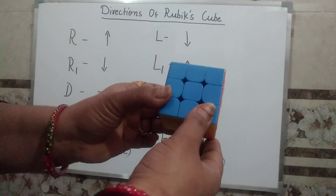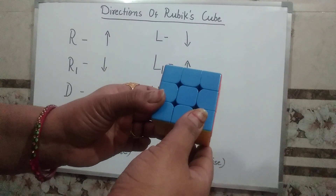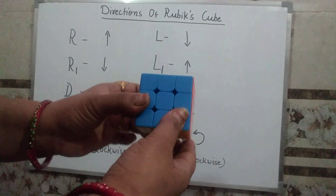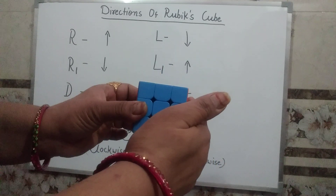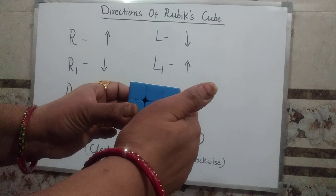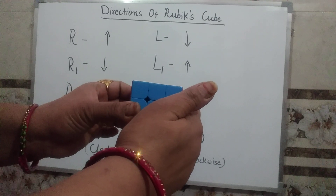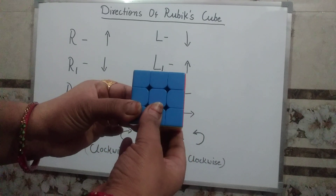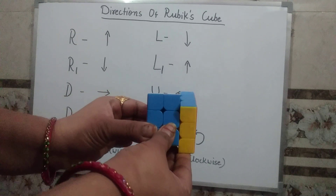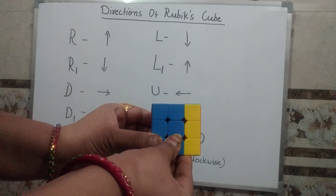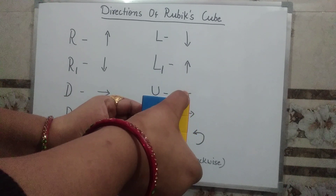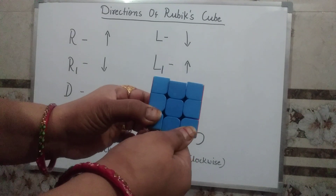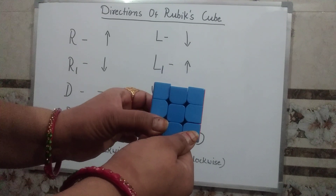So kids, first of all I am telling you about the direction of Rubik's cube. This is our right side, so this is called direction R. When we move it upwards it is R and when we move it downwards it is R1.